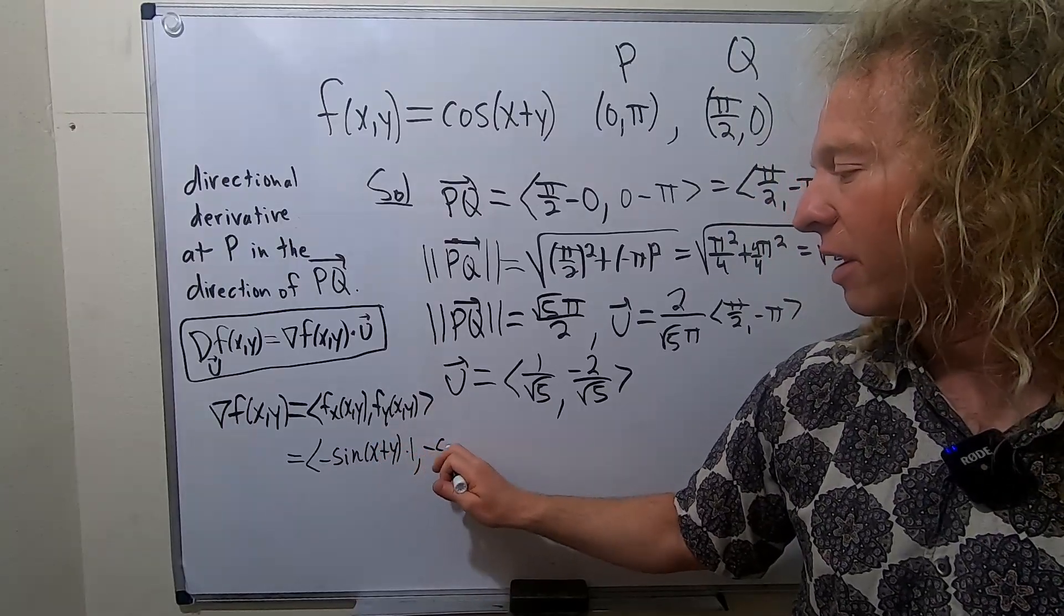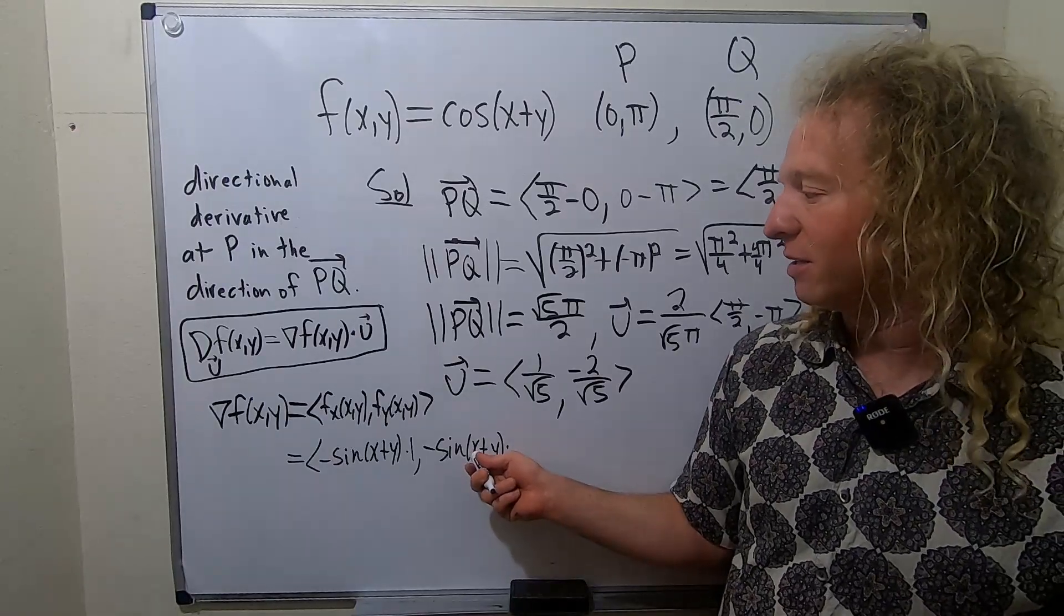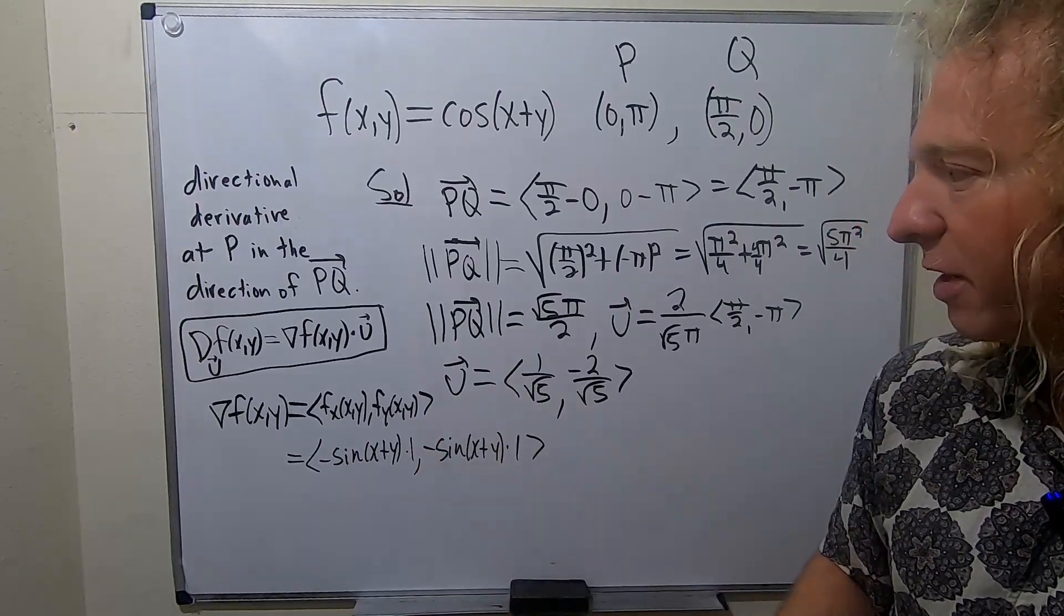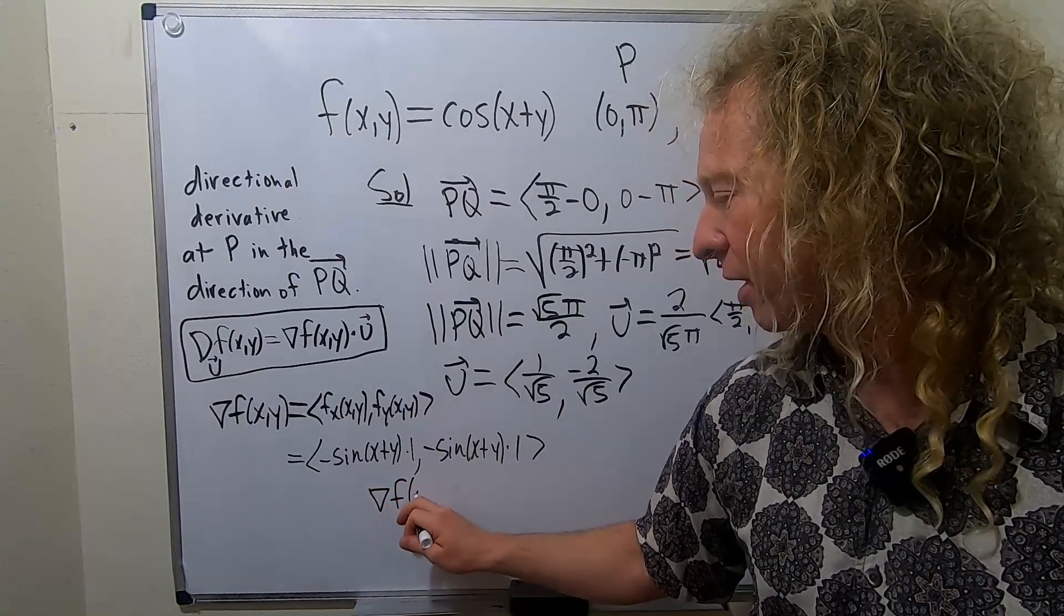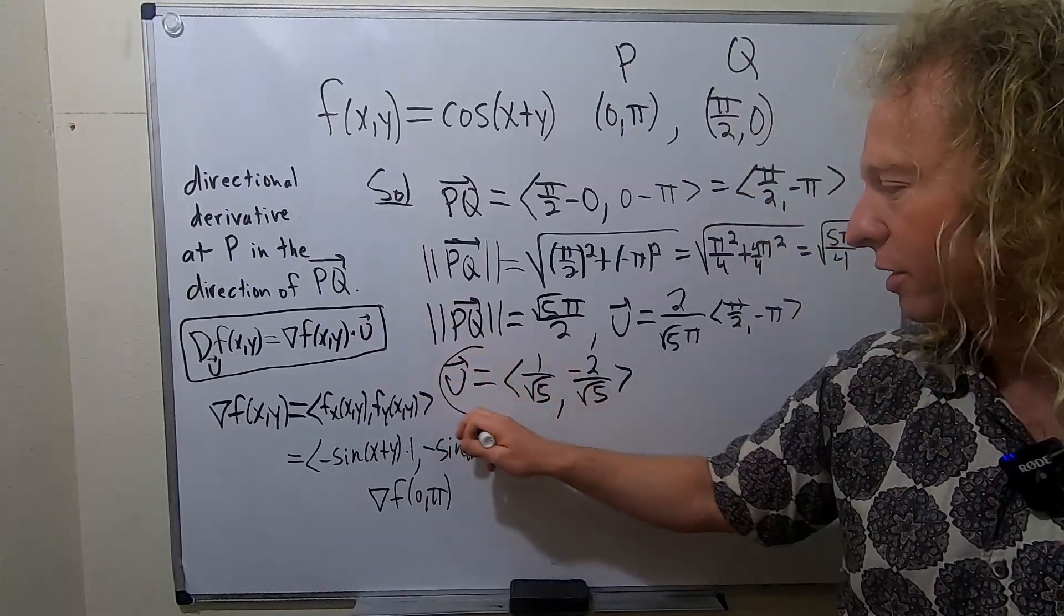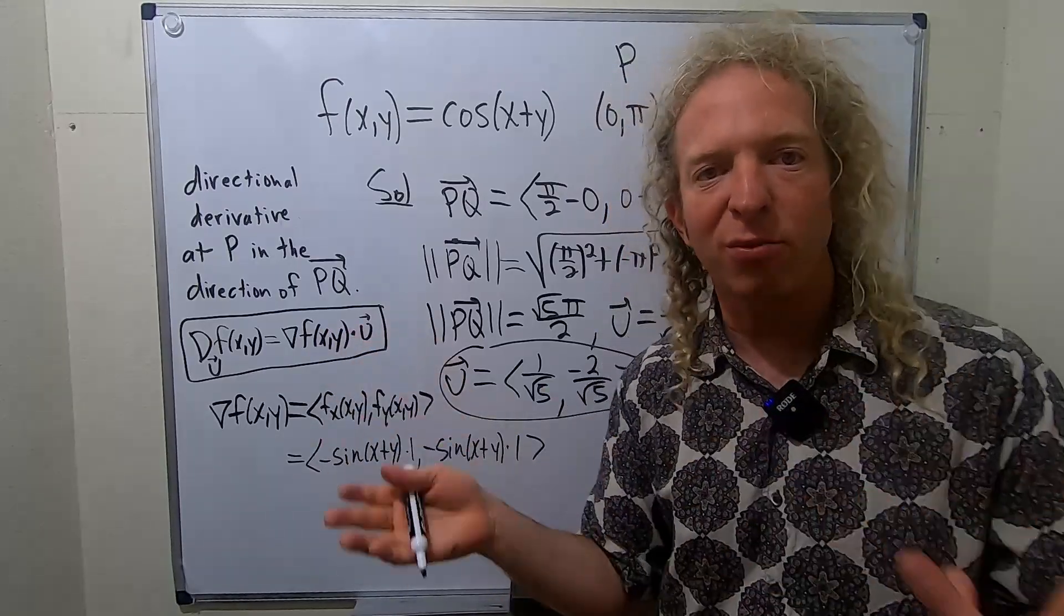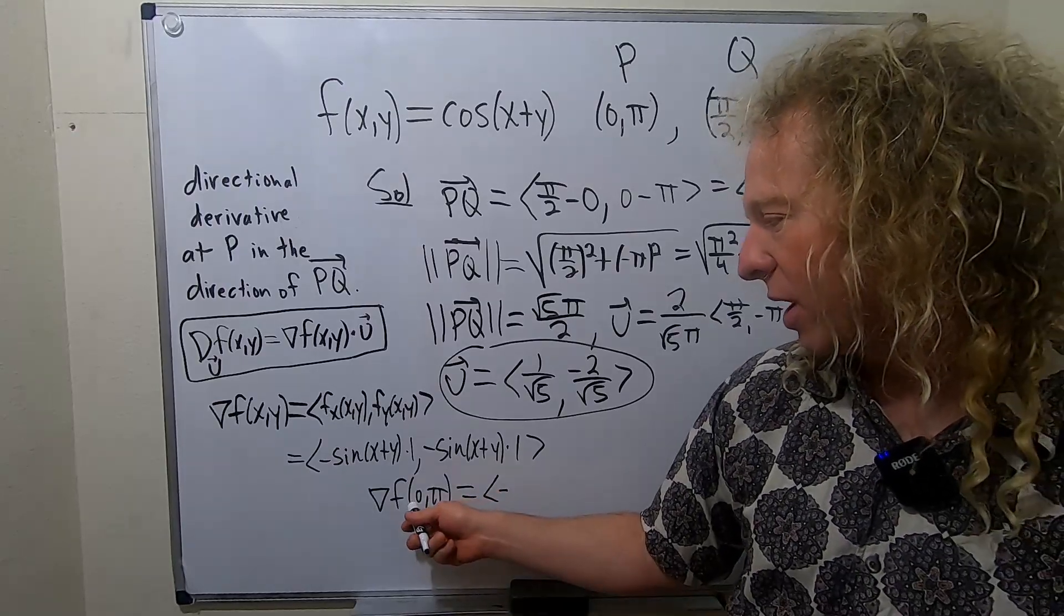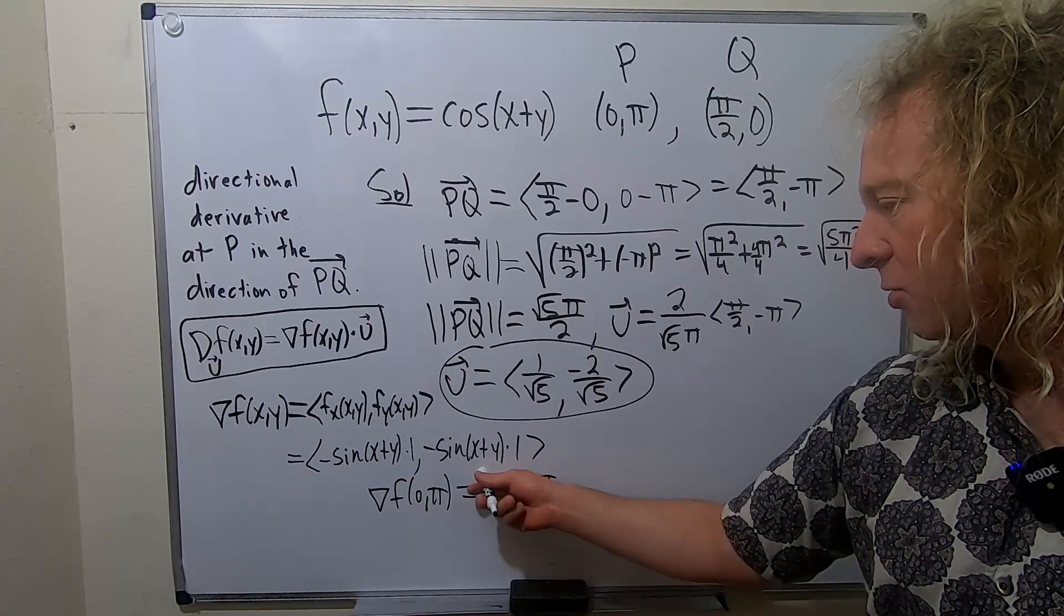Same thing here. It'll be -sin(x+y) times the derivative of x is 0 this time, derivative of y is 1. So same thing both times. Now we can plug in our point (0,π). The gradient vector at (0,π) - you see how I'm doing it in pieces. We first found u, so I'm going to circle it because that's important. Now we're going to find this. Once we find this, we have both things and we just take a dot product. This is negative - so x is 0, y is π - so sin(π).